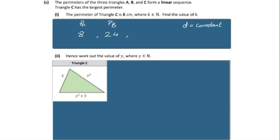So we can go 24 minus 8 is equal to 16. So we need to go to the third term now. So we're going to plus 16. And when we plus 16 to 24 we will get 40. So that is the perimeter of triangle C.